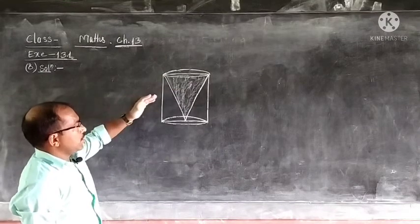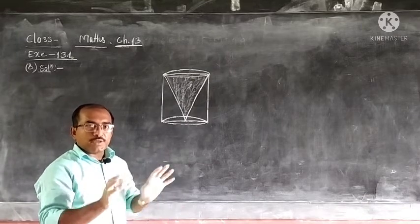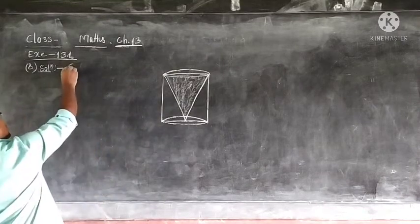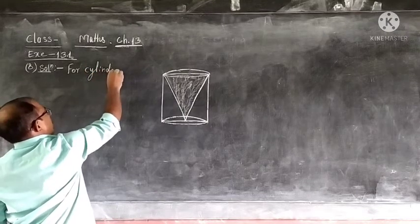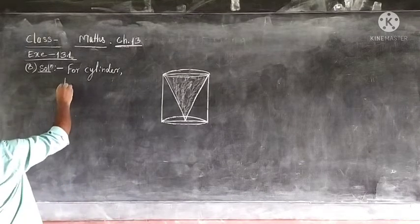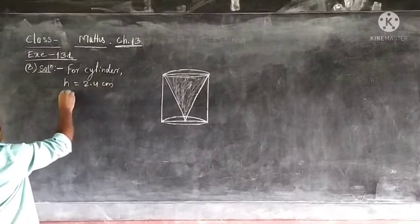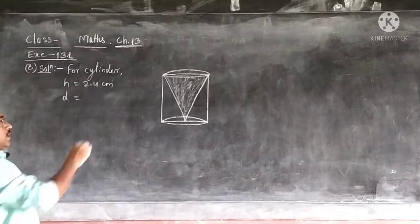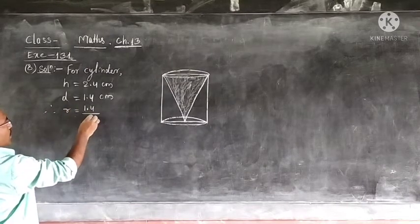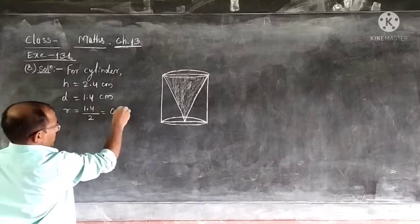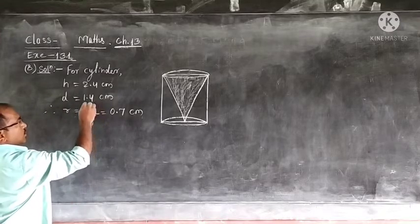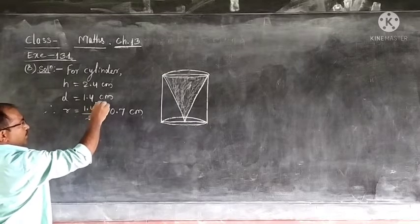When this portion is cut out, we calculate the remaining solid's surface area. For the cylindrical portion, height is 2.4 cm and diameter is 1.4 cm. When we see the diameter, immediately we find the radius: 1.4 ÷ 2 = 0.7 cm. For the conical portion that is hollowed out, the height is the same — 2.4 cm — and the radius is also 0.7 cm.